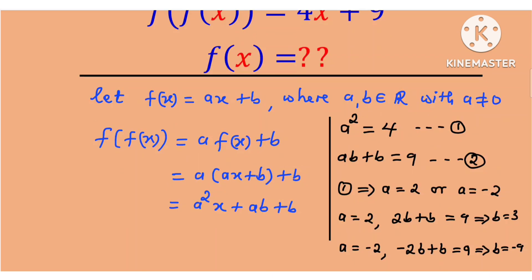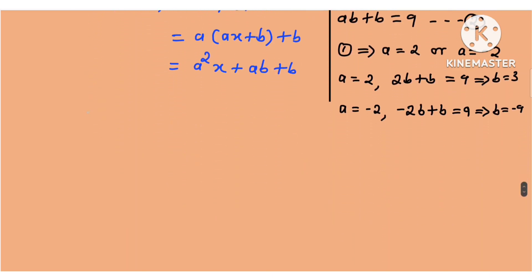Now coming back to our function, we have f of x to be equal to ax plus b. So this implies that f of x is equal to 2x plus 3, or f of x is equal to negative 2x minus 9.